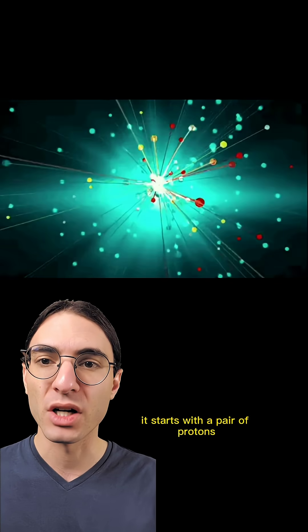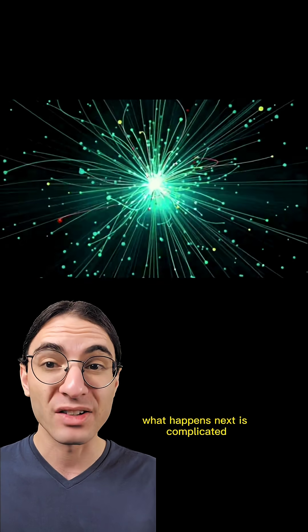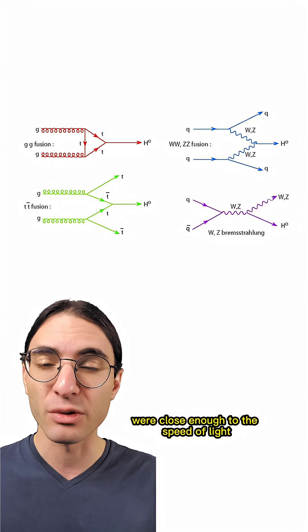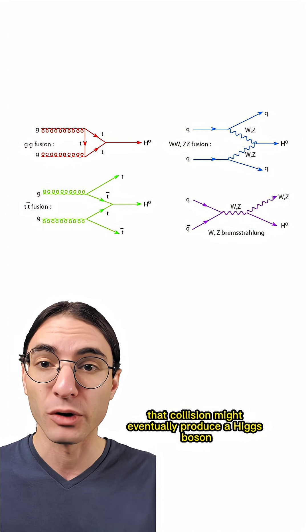It starts with a pair of protons heading on a direct collision course with each other. What happens next is complicated, but the theory predicted that if protons were close enough to the speed of light, that collision might eventually produce a Higgs boson.